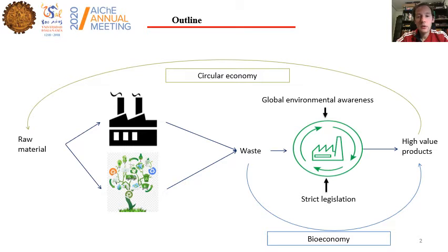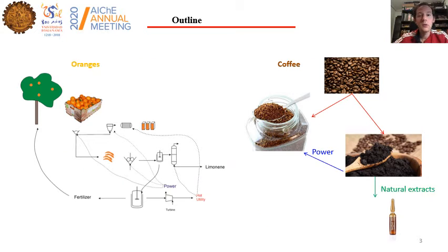We are all aware that our society is generating a lot of waste. However, thanks to global environmental awareness as well as stricter legislation, we are developing technologies and making use of that waste to produce high-value products as well as reuse part of the waste, creating this circular economy. We will consider its application to the food industry: orange juice production and natural extracts from spent coffee grounds.